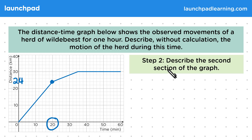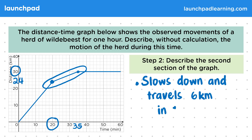For step two, describe the second section of the graph. Although we aren't calculating the actual gradients, we should still describe them and show we understand what they tell us about the motion. Since this section has a shallower gradient than the first, we can deduce that the herd must be travelling more slowly now. We've gone from 24 to 30 kilometres on the y-axis, so the herd travelled 6 kilometres, and the time went from 20 to 35 minutes, so this took 15 minutes. Overall, the herd slows down and travels 6 kilometres in 15 minutes.